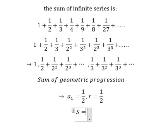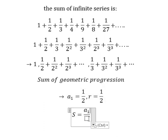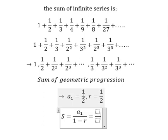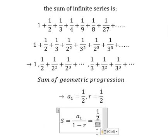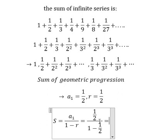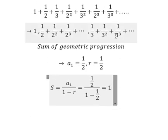is S equals a₁ over 1 minus r. We put a₁, that is 1 over 2 here, 1 minus 1 over 2, and this one we have number 1. We have number 1. Now we do similar for this one.